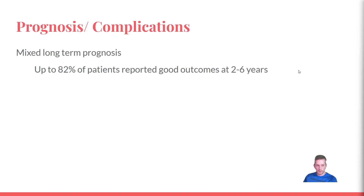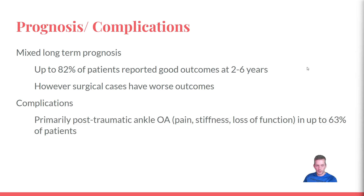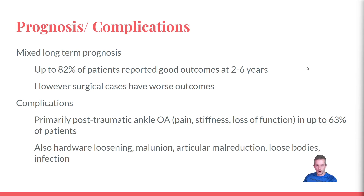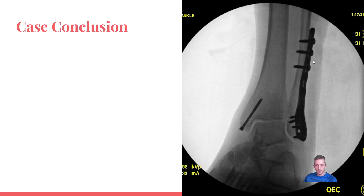Long-term prognosis is mixed — even with proper management, patients can report good outcomes but may eventually develop arthrosis. If surgery or dislocation is involved, outcomes are worse. Complications include post-traumatic ankle arthritis with pain, stiffness, and loss of function, as well as hardware loosening, malunion, articular malreduction, loose bodies, and infection.